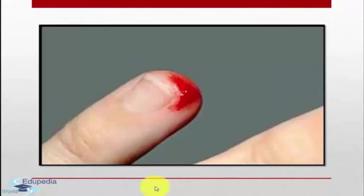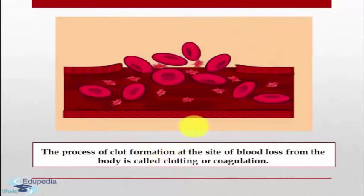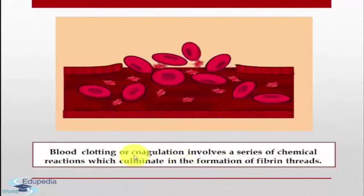The process of clot formation at the site of blood loss from the body is called clotting or coagulation. Blood clotting or coagulation involves a series of chemical reactions which culminate in the formation of fibrin threads. Clotting of blood prevents further loss of blood and entry of pathogenic microorganisms. Blood clotting involves participation of many substances like calcium ions, commonly known as clotting factors or coagulation factors.